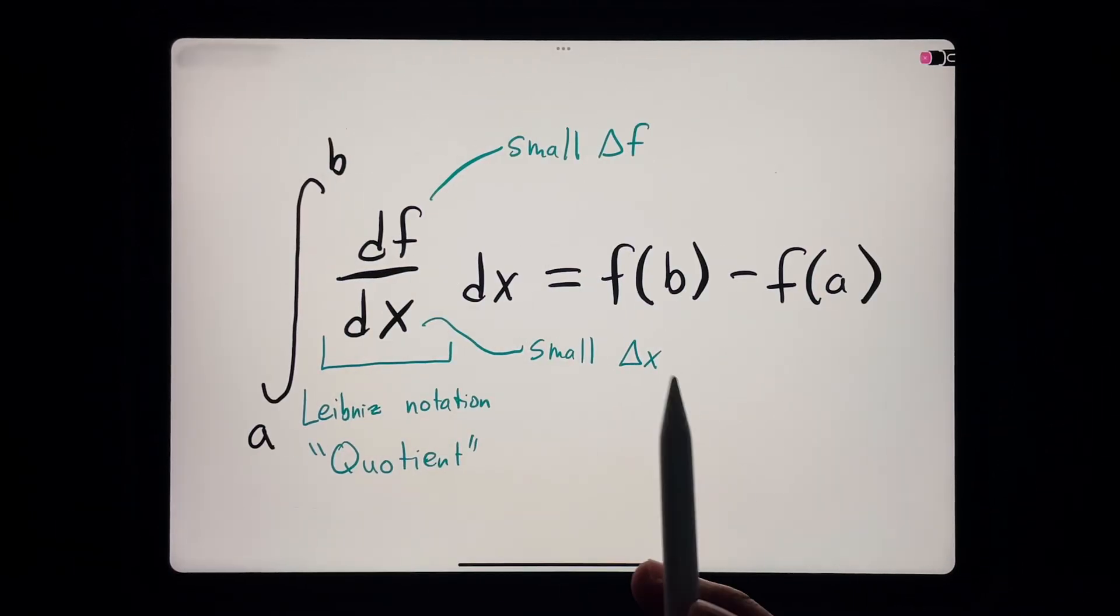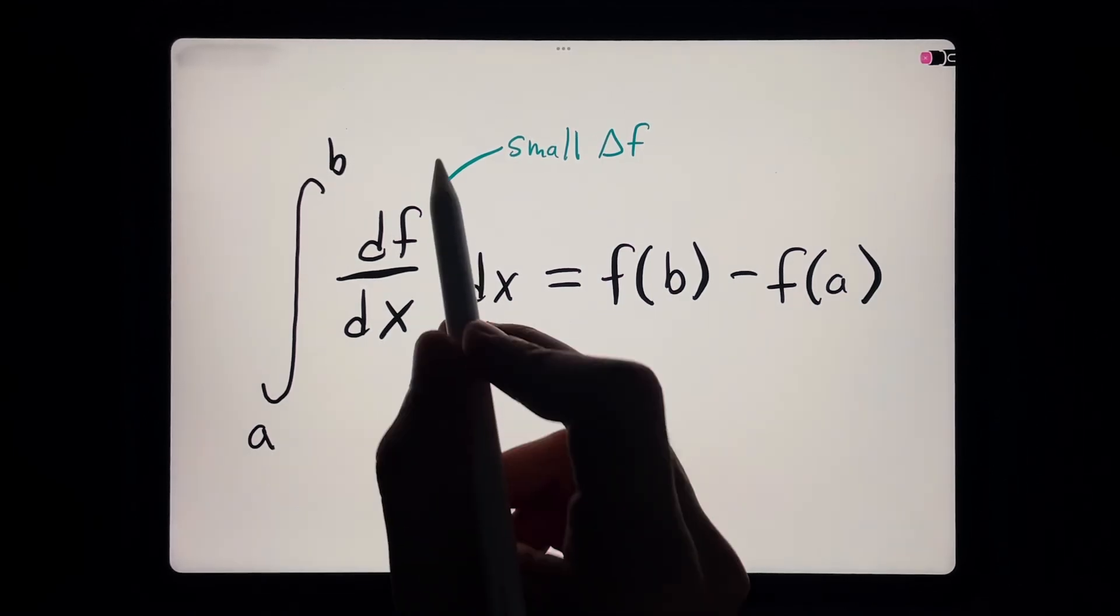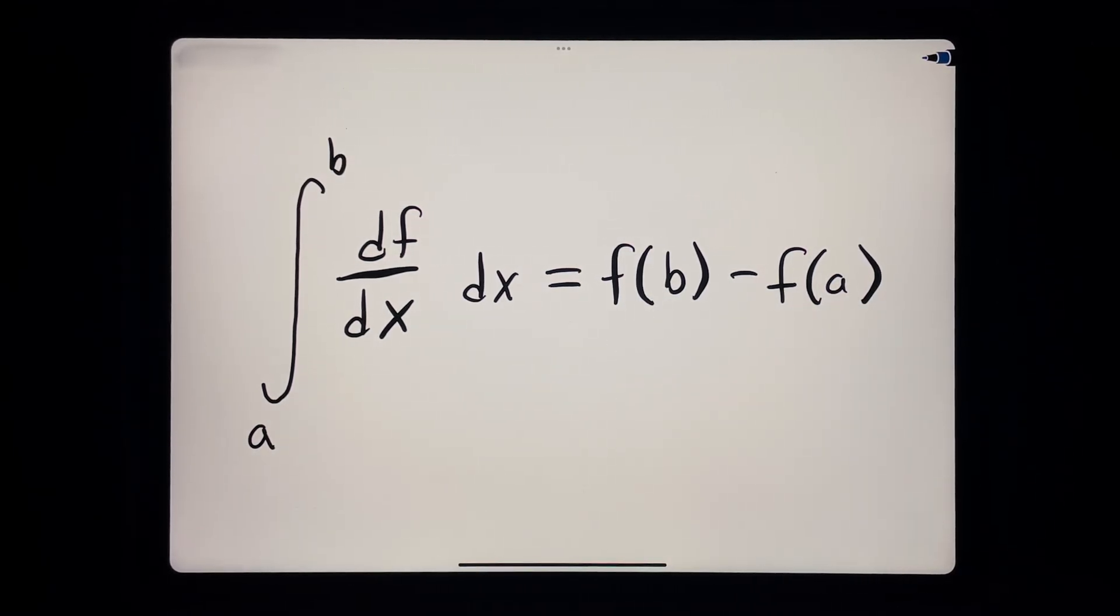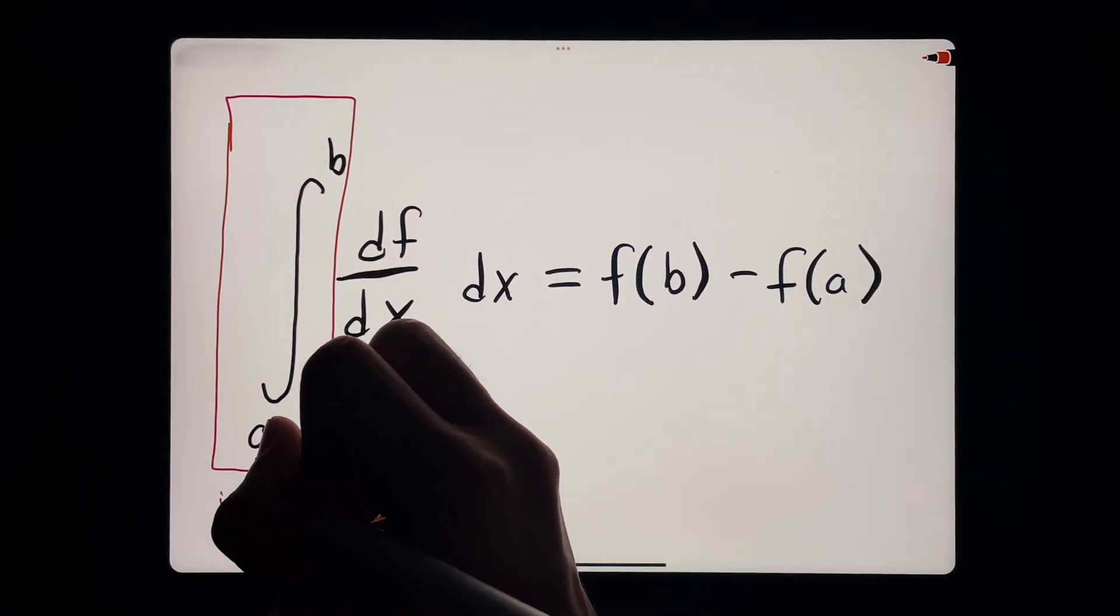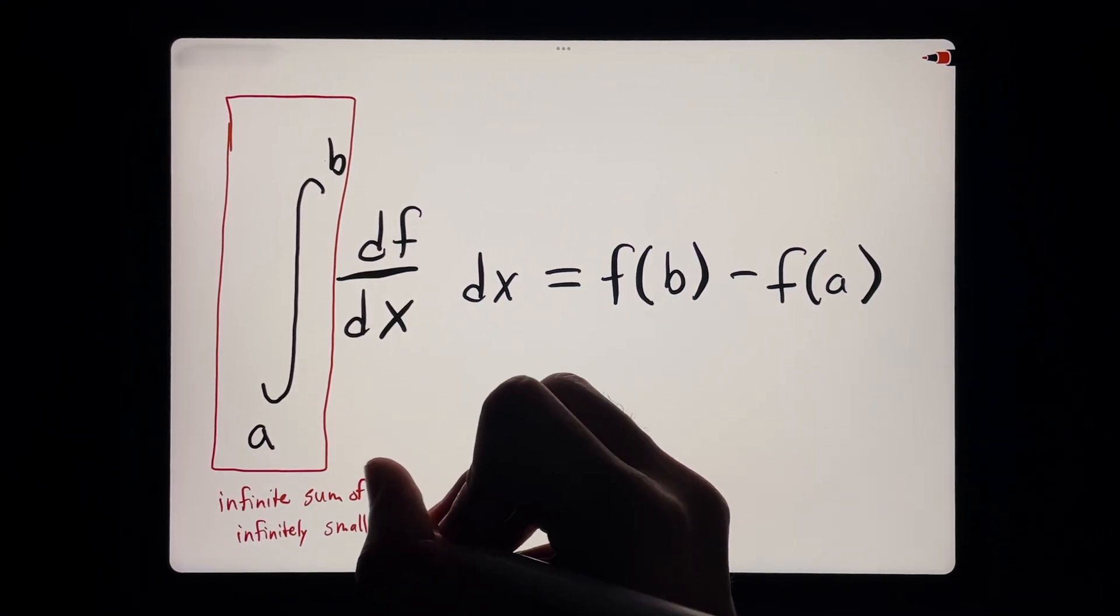When we describe the fundamental theorem in this way, we've essentially broken down the ideas of integration and derivation completely. Integration is the infinite summation of infinitely small components, while derivatives are simply slopes.